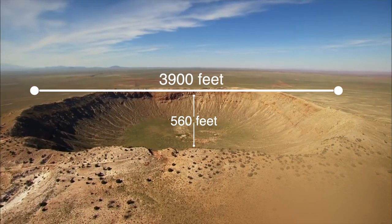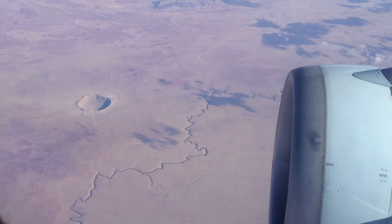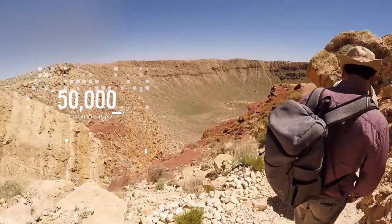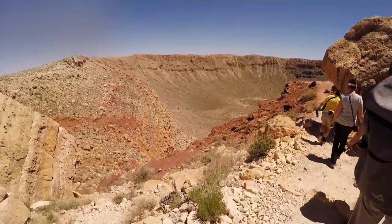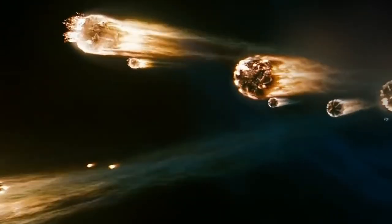The famed meteor crater in Arizona is 3,900 feet from rim to rim and 560 feet deep. The crater was carved out by an impact that occurred 50,000 years ago by a meteorite 50 meters in diameter, around the same size as the Tunguska meteor. Had it not broken apart in the atmosphere, the Tunguska impact could have left behind a lot more than just broken trees.